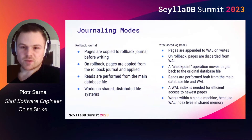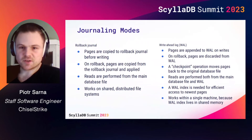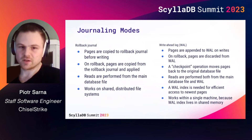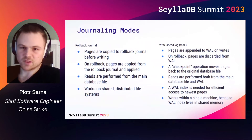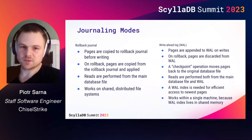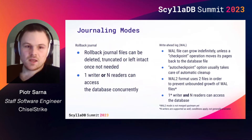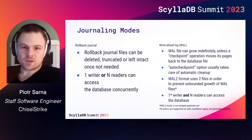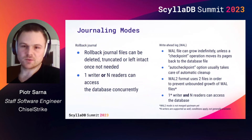Later, a new journaling implementation was added: a write-ahead log, also known as WAL. It uses the opposite idea — pages are never written directly to the main database file during a transaction; instead they land into a new file, the write-ahead log. On rollback, the main database file is left intact because nothing was written to it in the first place. On commit, nothing really happens immediately because reads are performed from both the main database file and the log. However, the write-ahead log would keep growing indefinitely if never truncated, so there's a checkpoint operation which compacts the log back into the main database file.